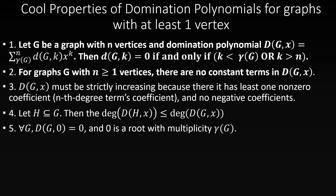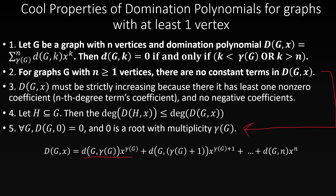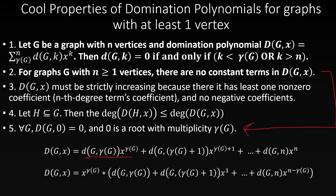The fifth property is that 0 is a root of the domination polynomial of any graph, and more specifically it occurs with multiplicity equal to the domination number of that graph. This follows from the second property: since there are no constant terms, inputting 0 for x gives 0. Also, since the smallest degree term with non-zero coefficient has degree equal to the domination number, we can factor out x to the domination number, giving an alternate representation that clearly shows 0 is a root with that multiplicity.